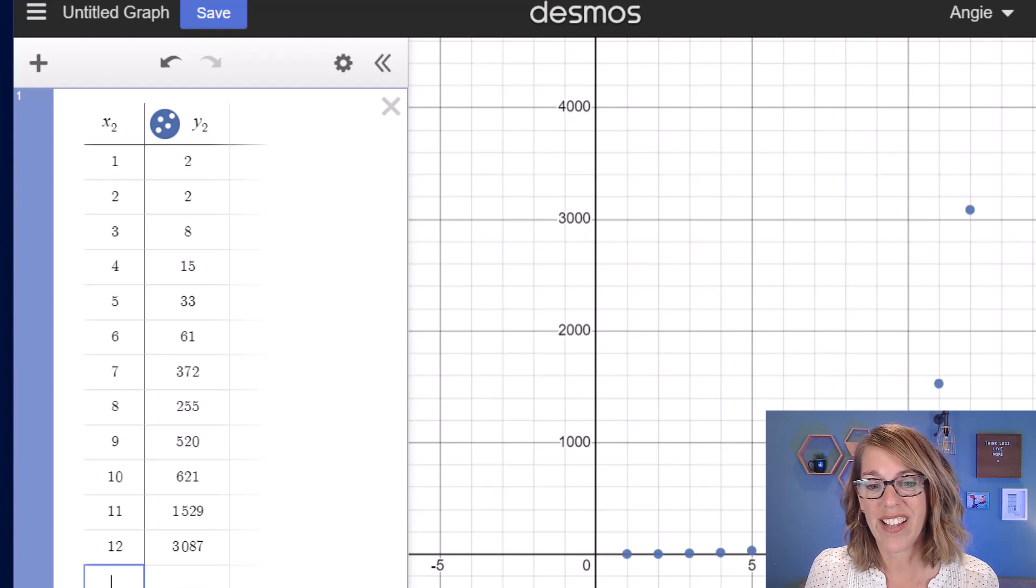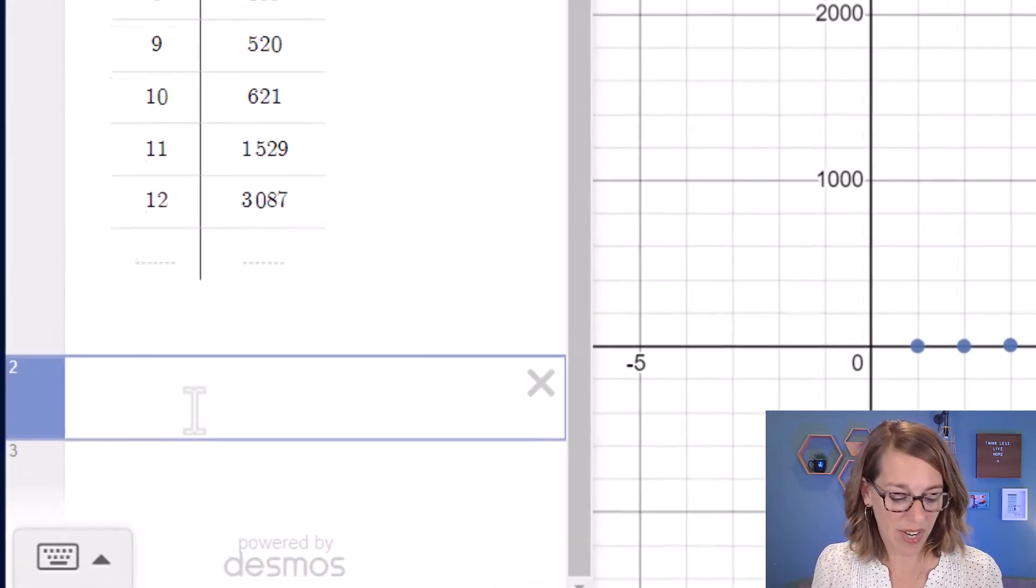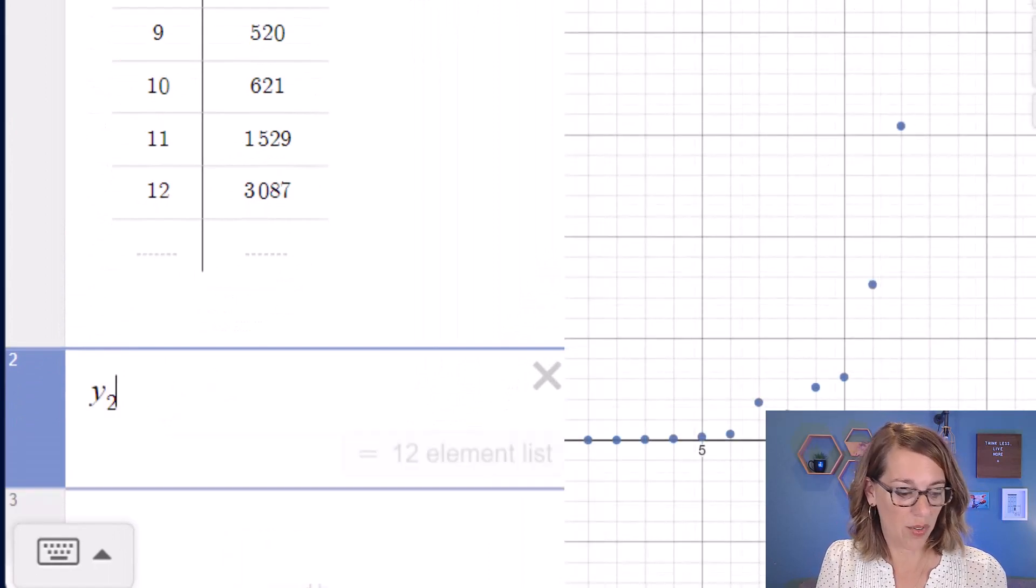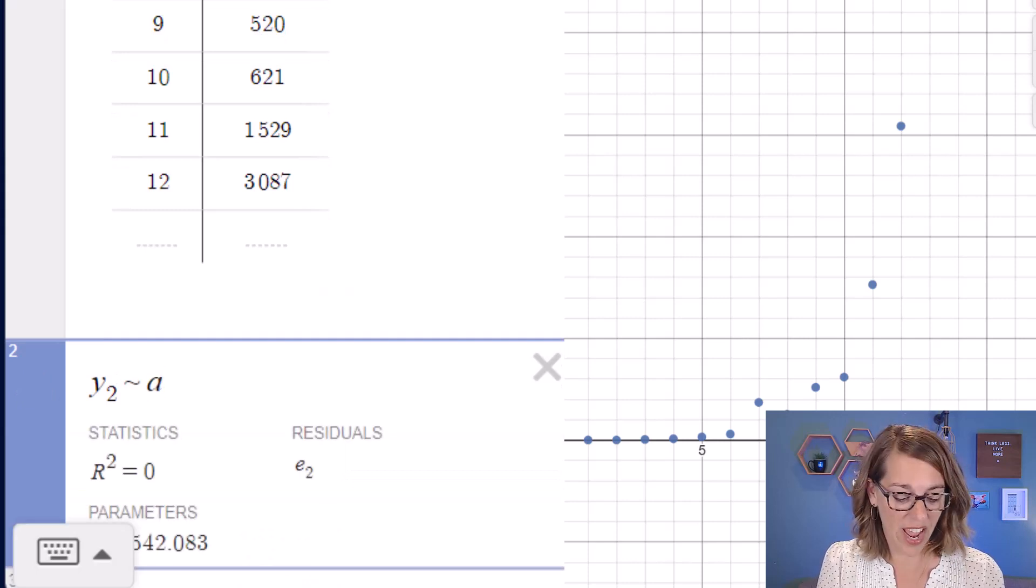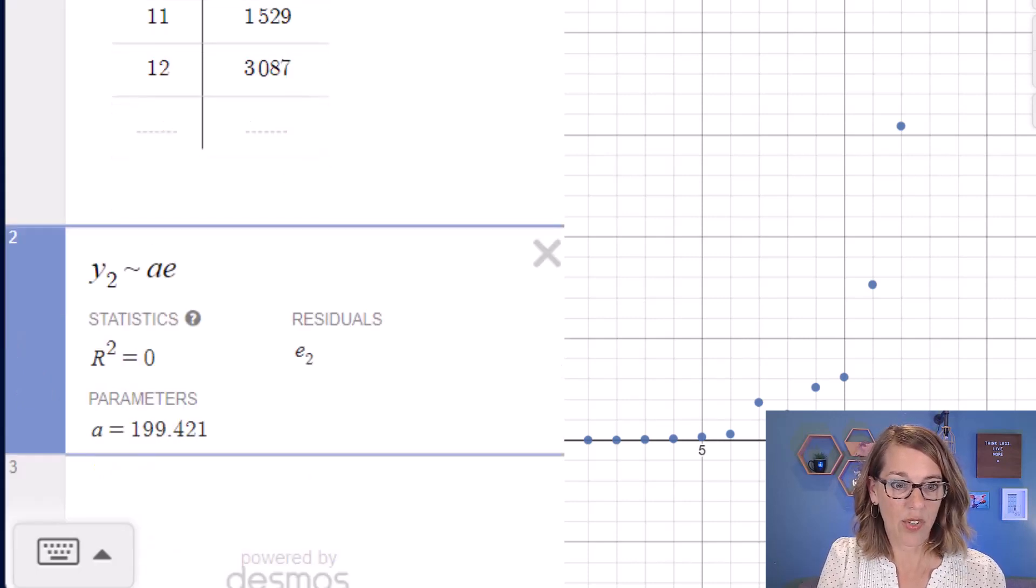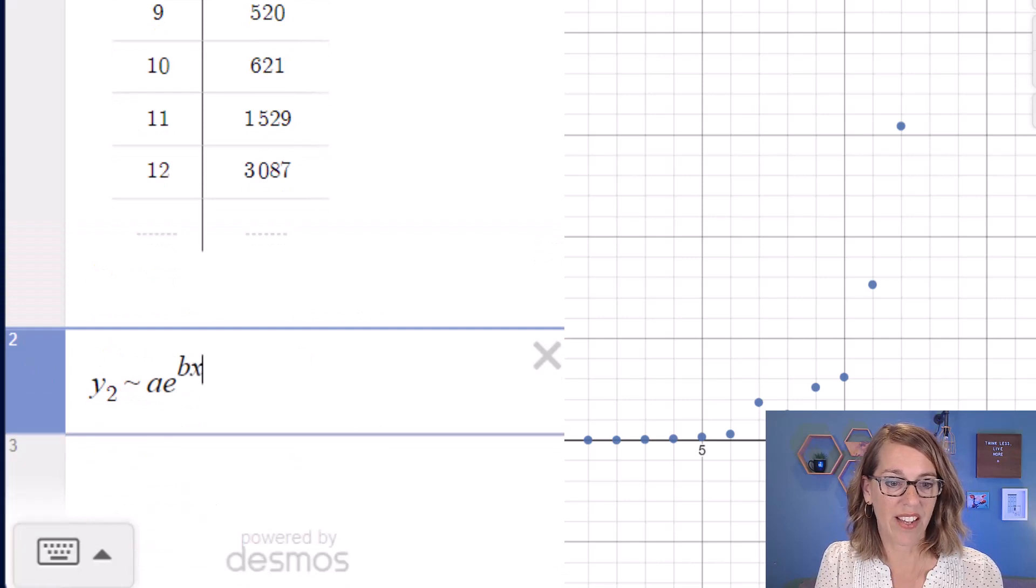And I'm going to do a regression, and it definitely looks exponential here. Now I'm going to grab an empty cell and put y2 tilde. This is an exponential. So I'm going to leave a multiplier out in front, a coefficient a, and then e to the bx2.